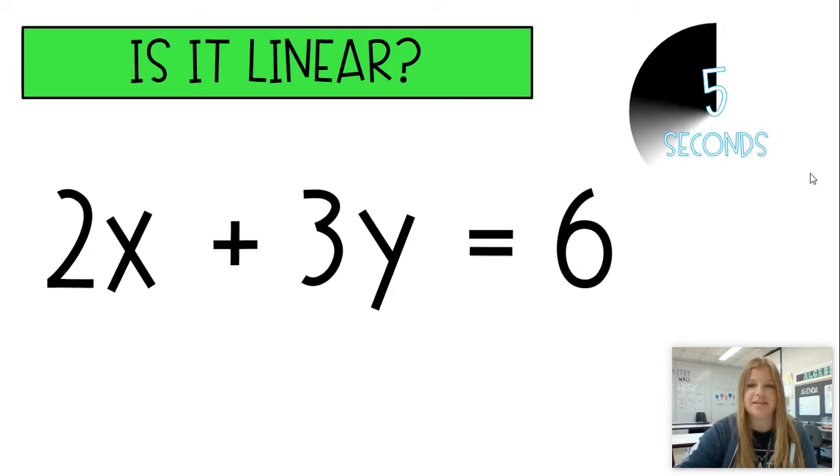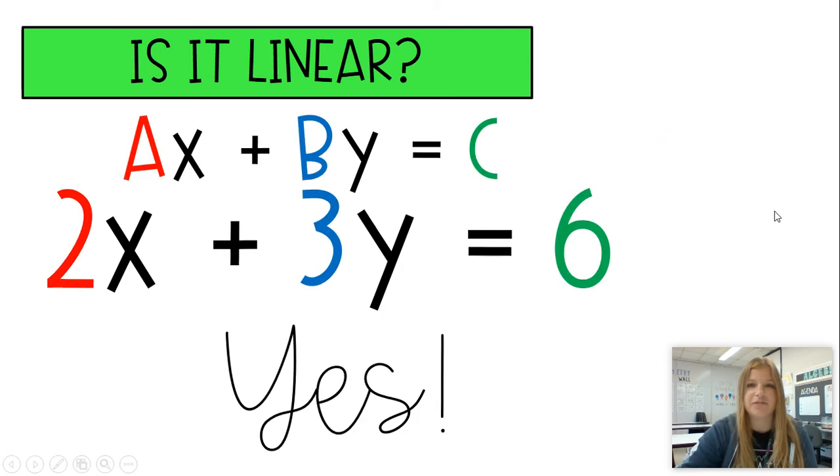Is it linear? Yes, it's definitely in the form of AX plus BY equals C. A is 2, B is 3, C is 6.